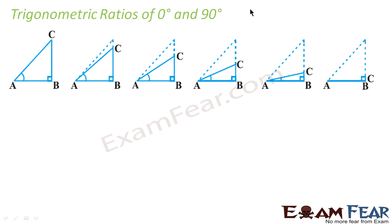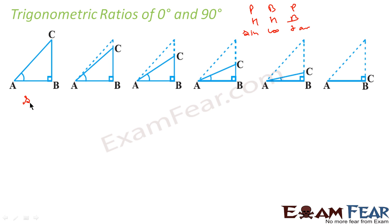So if you see, we have the formula — Pundit Badri Prashad, Hari Hari Bold — this is for sin, for cos, and this is for tan. So sin theta is equal to p by h. In this case, if angle A is theta, this is h, this is p, and this is b.